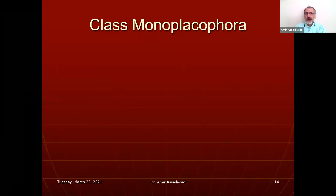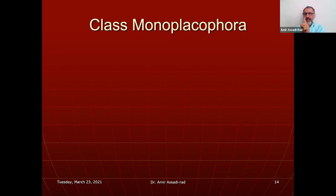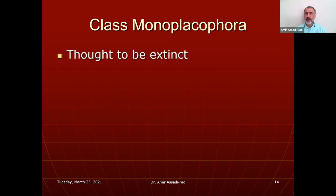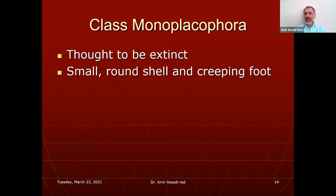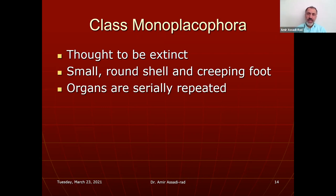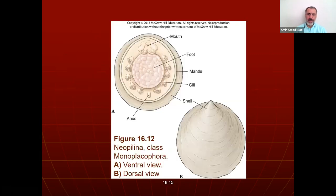Class Monoplacophora: 'placophor' means flat shell, 'mono' means one. For a long time these organisms were thought to be extinct, but they were found off the coast of Costa Rica. They look like very ancient molluscs. They have a small round shell and creeping foot, and the organs are serially repeated — unlike the rest of the phylum.